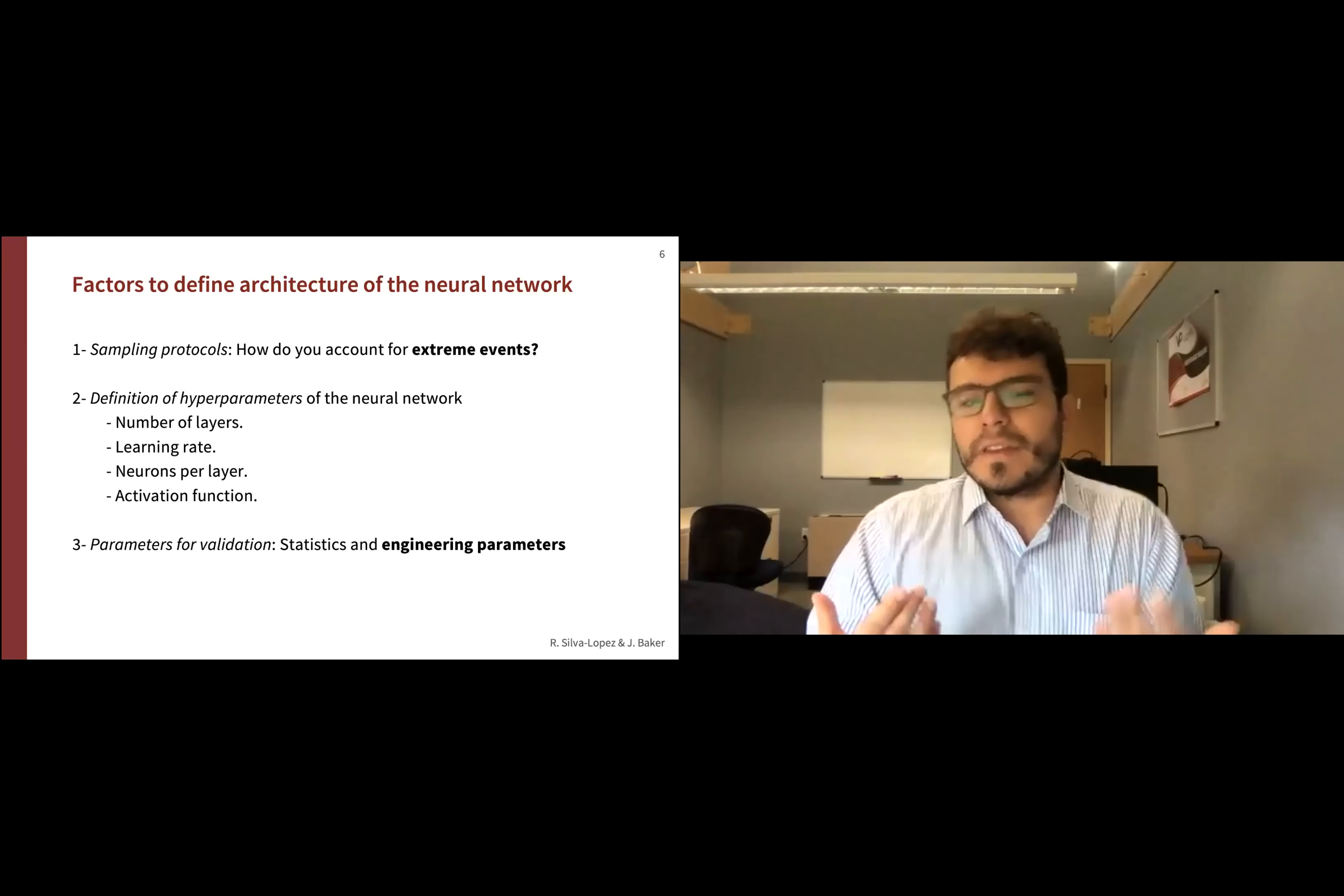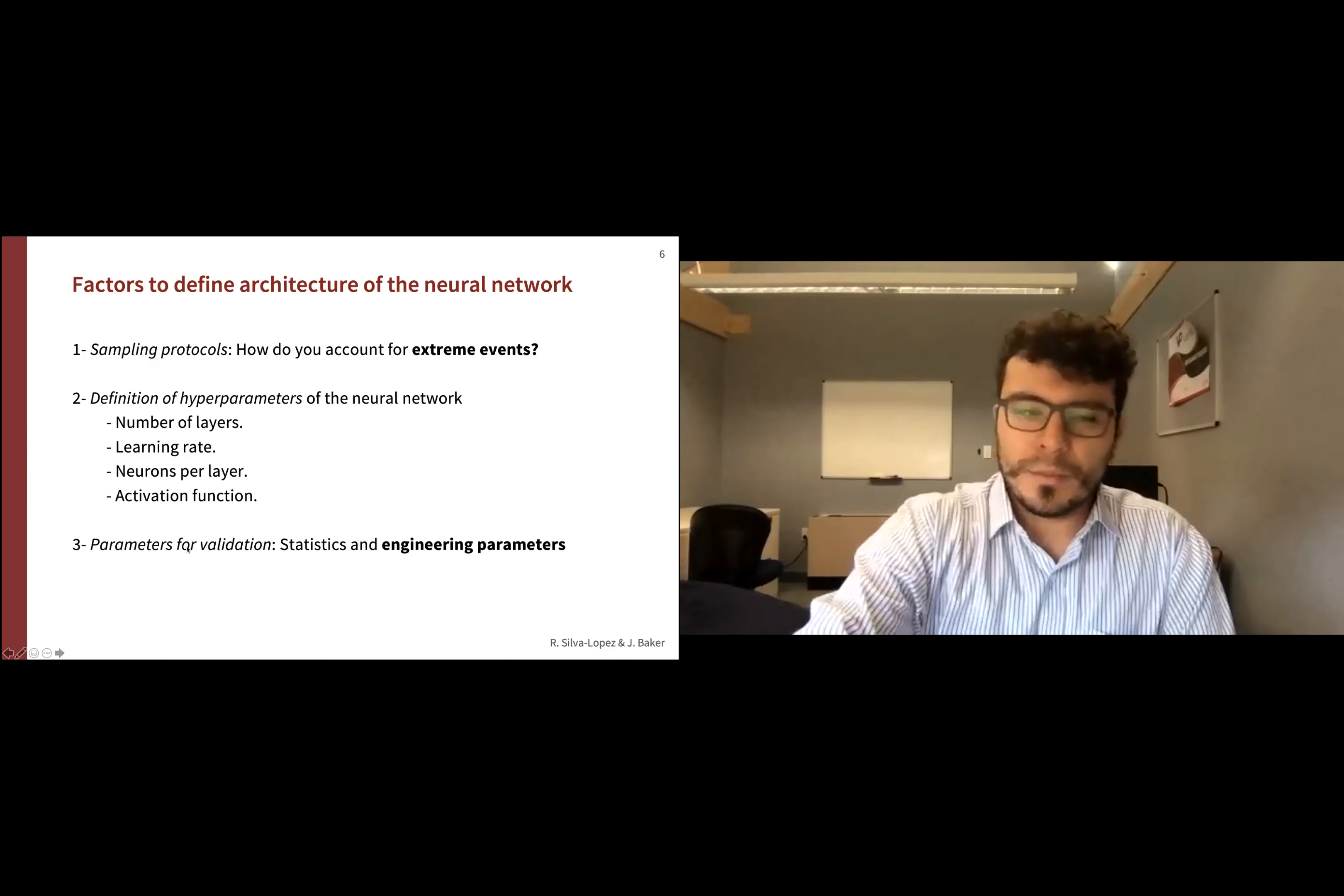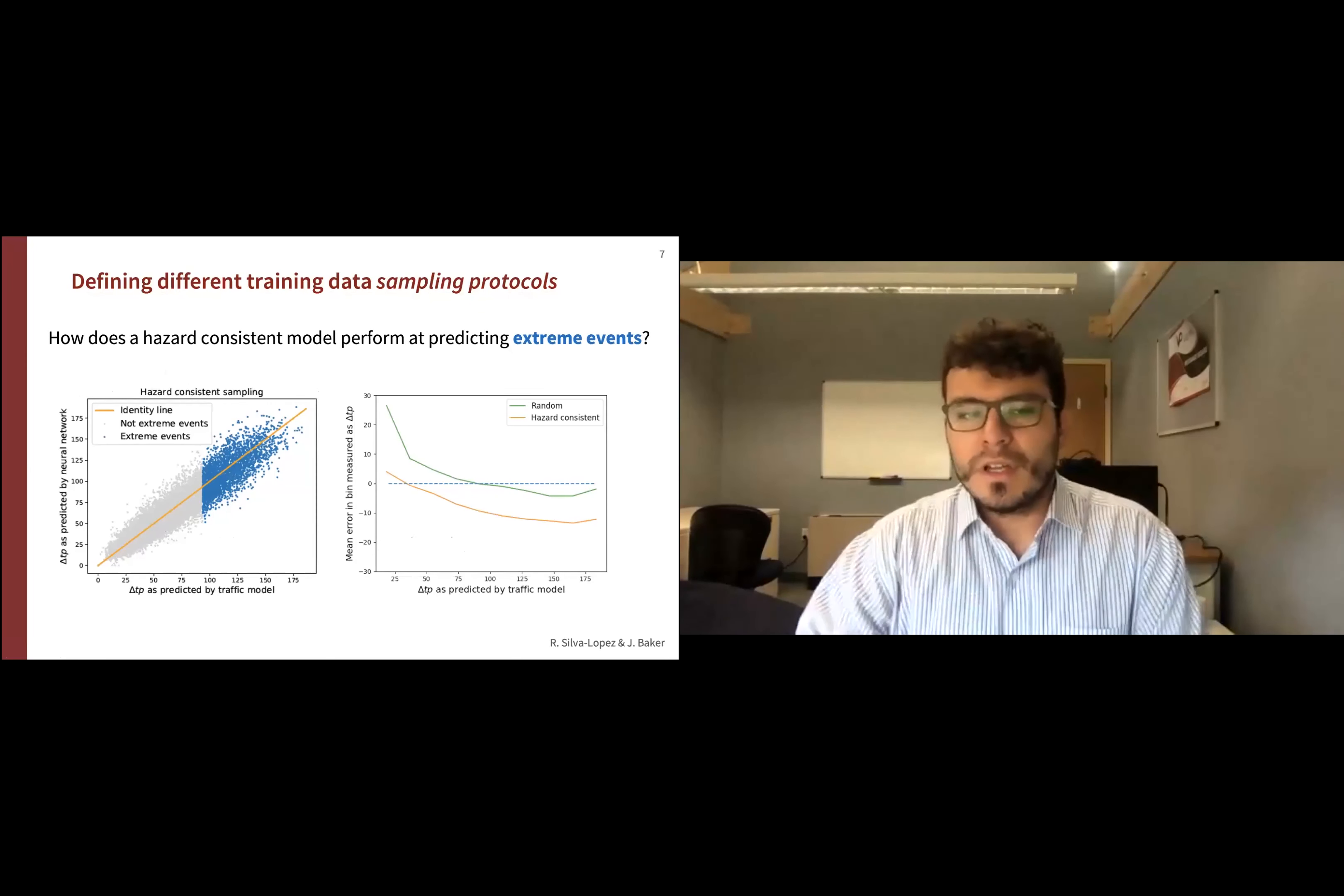When you think about these kinds of regression models and neural networks, there's statistical validation. But in terms of our purpose, we're civil engineers managing road networks. Besides statistical validation, we also want to think about engineering parameters such as expected annual traffic loss. For this presentation, I'm going to focus on the first and third challenges, which are more important for our community. We want to explore how a hazard-consistent model performs at predicting extreme events. Here we're showing a scatterplot of how the neural network on the y-axis predicts compared to the traffic performance predicted by the traffic model on the x-axis.